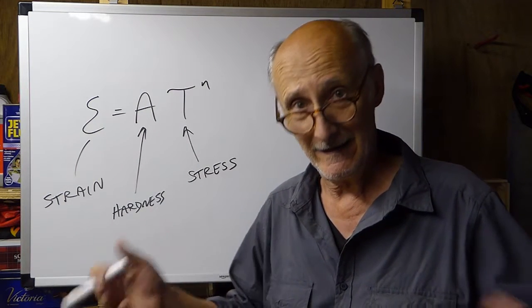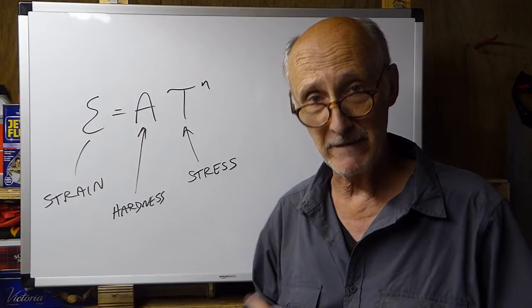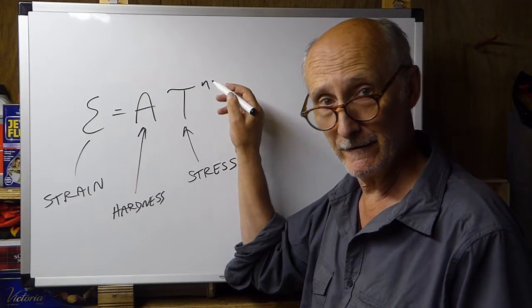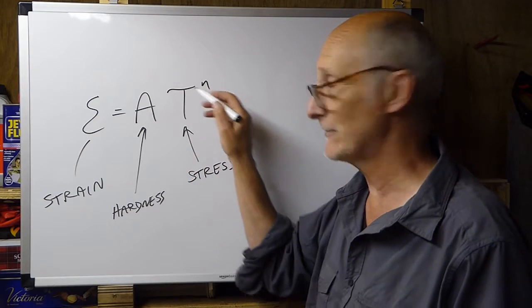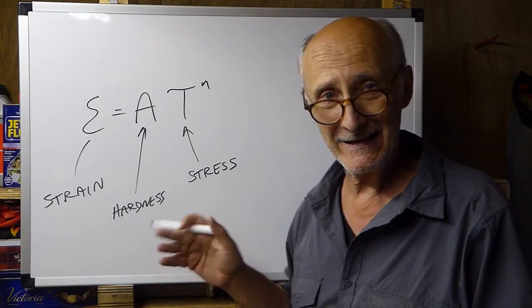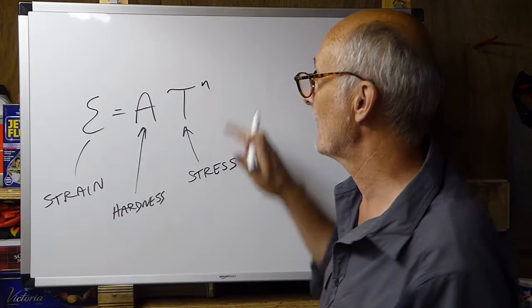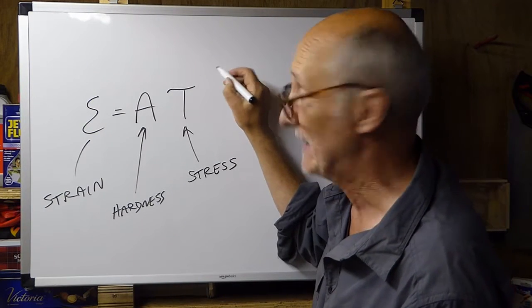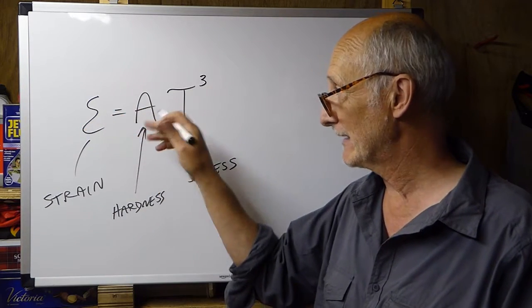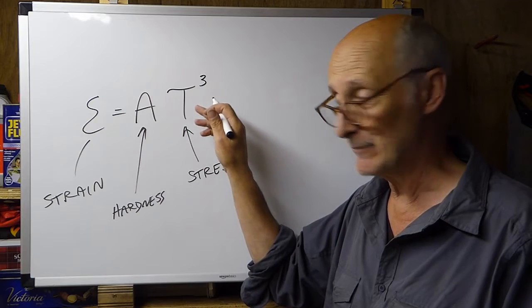Now, what Glenn discovered by doing his experiments applying stress to blocks of ice and measuring the amount of deformation is that this term up here, the flow law exponent, which we've written down as n in this equation, well, he found that that comes out to a number somewhere around 3. So, we're going to replace the n with a 3 and we're going to say E equals A times tau cubed.